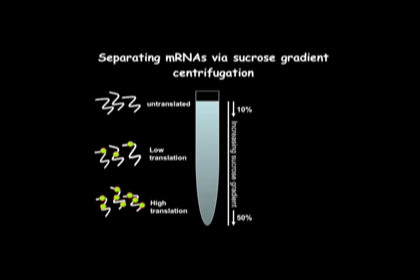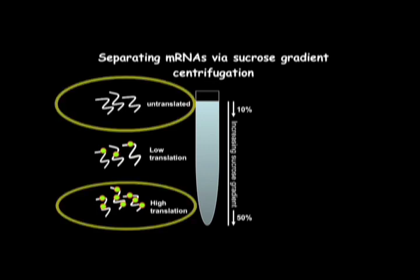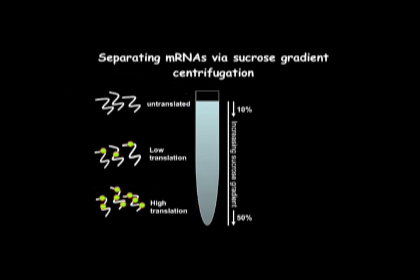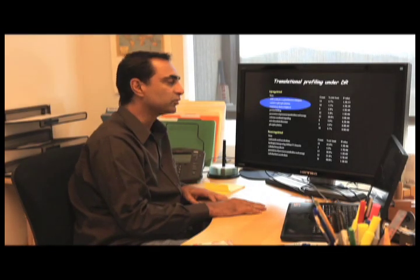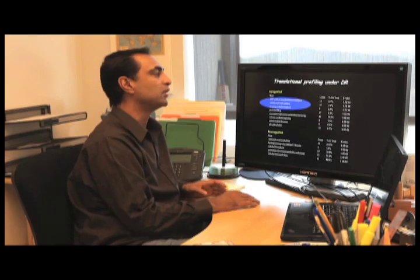After microarrays on the genes, comparing mRNAs that are highly translated versus those that are lowly translated, you can get an idea of the translatability of an mRNA. We found that, indeed, under dietary restriction, there is differential translation of a number of genes.